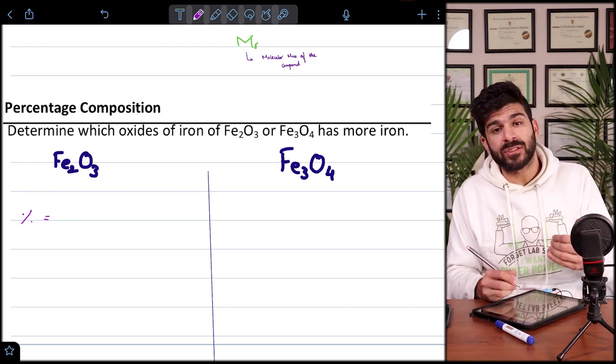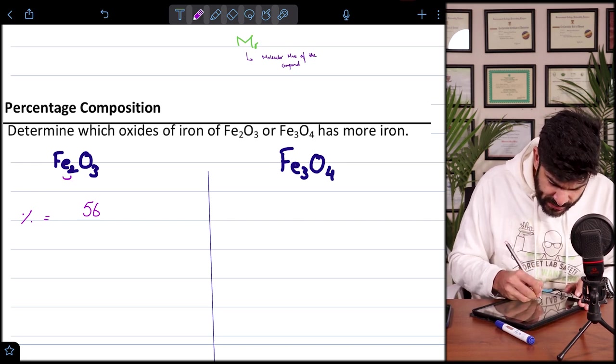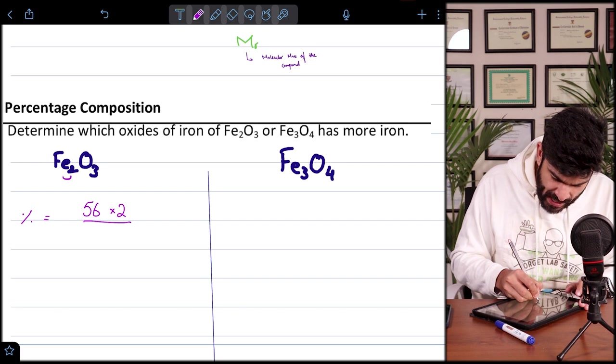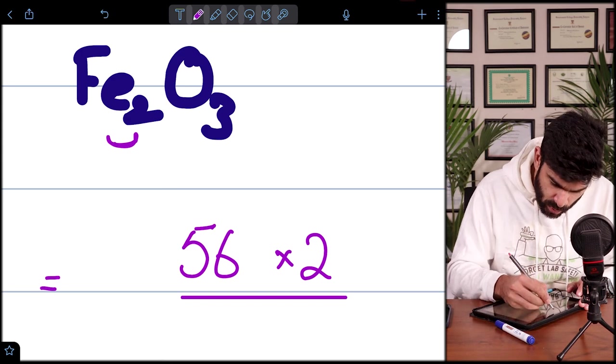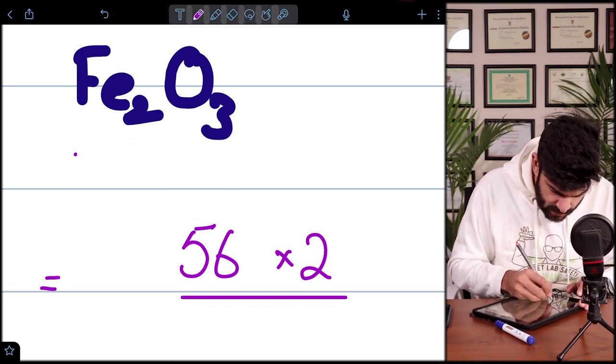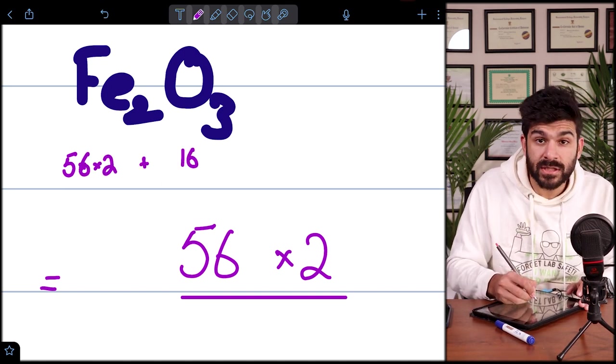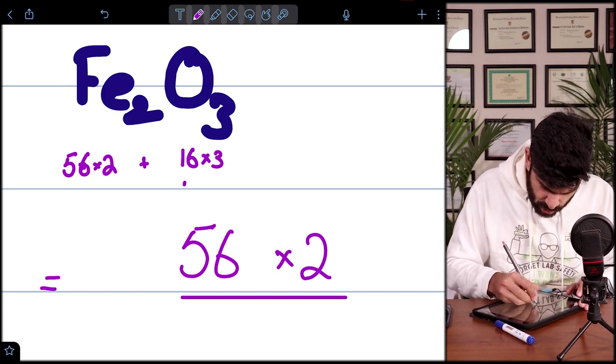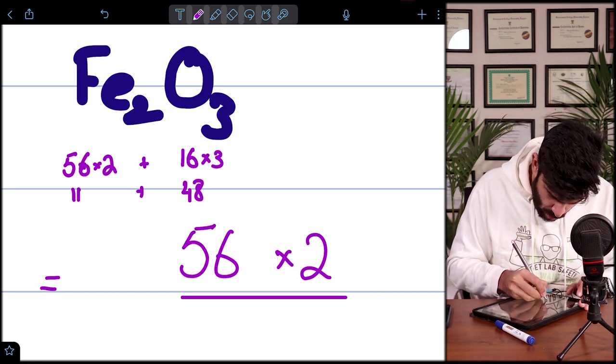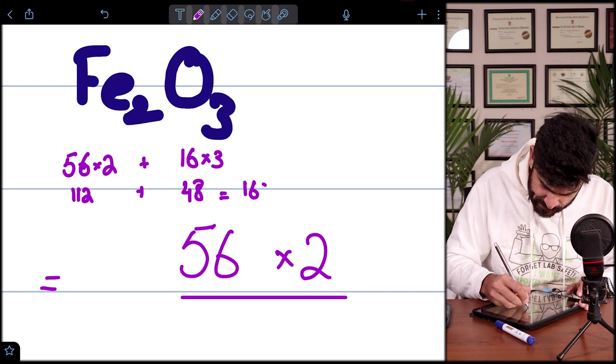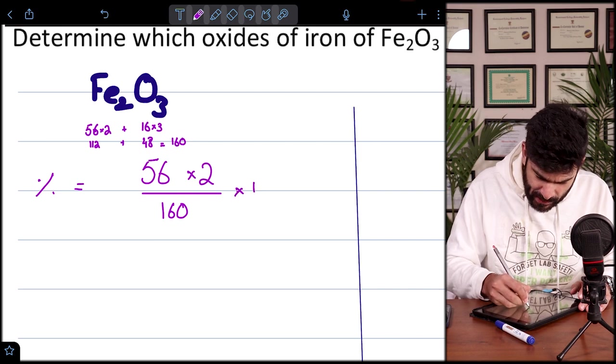So 56. And how many irons do we see here? We see two. So two irons and divided by the MR of iron to oxide. So we need to calculate the MR. Let's calculate it. 56 into 2 plus 16, which is the AR of oxygen, into 3. So this becomes 48 and this becomes 112, that becomes 160. So we're going to divide this value by 160 and then multiply by 100.